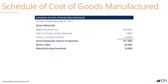We then add to that the direct labor — the number of hours worked times the hourly rate — and we add the manufacturing overhead allocated to producing goods. There we have our total manufacturing costs: 55,800.